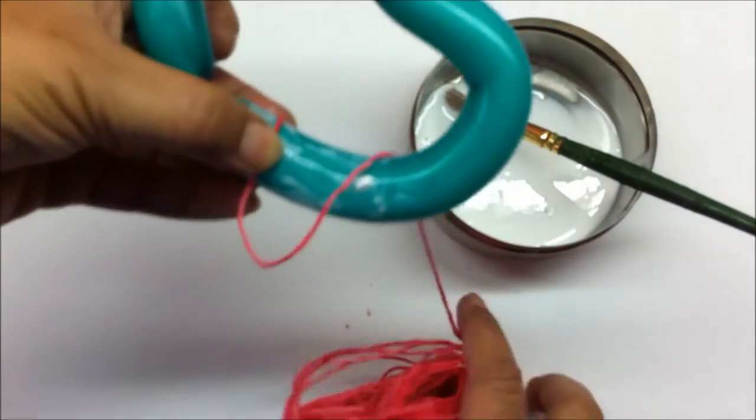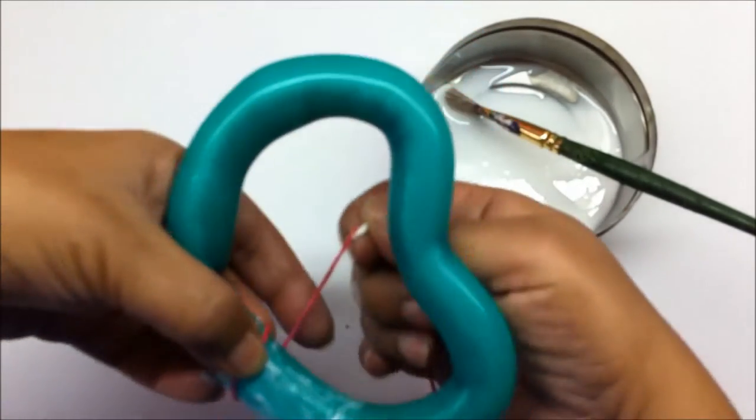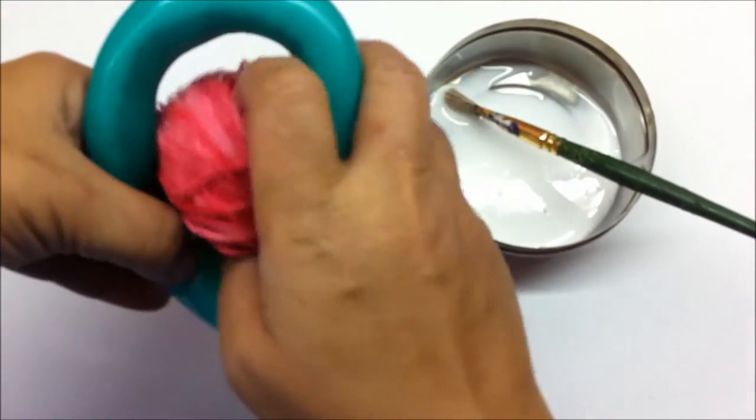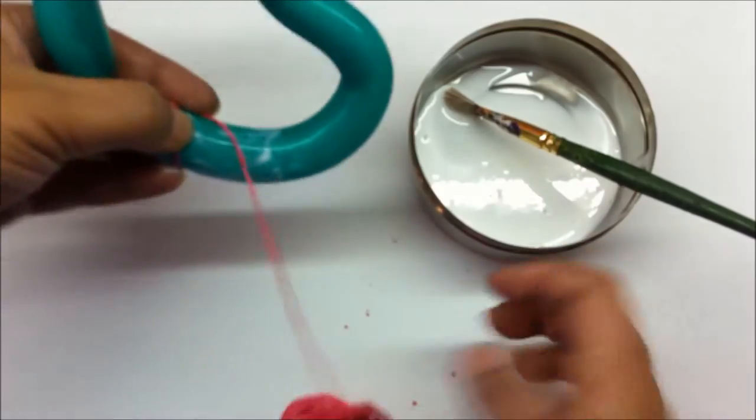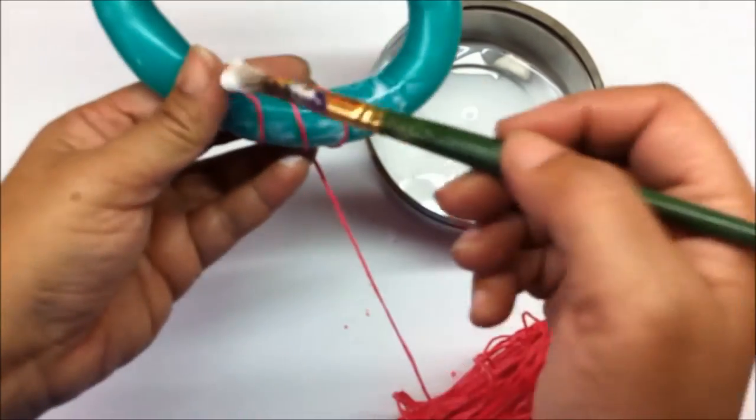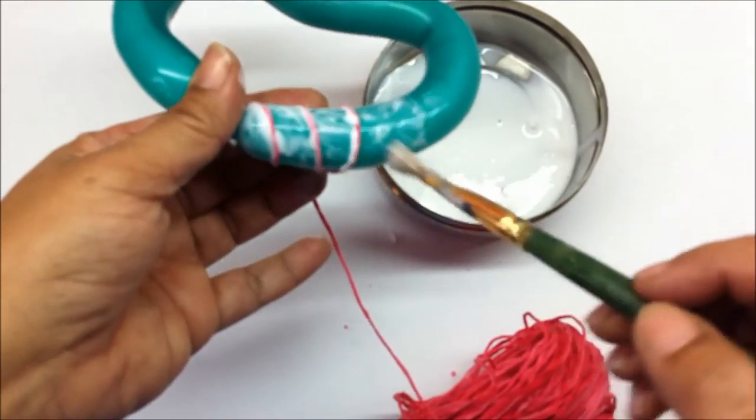Wrap it around. Cover the whole balloon. First I am taking it in circles, then I will make a zig-zag pattern. Coat the thread also with the glue so it sticks to the balloon.